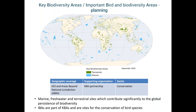Key Biodiversity Areas, KBAs, are nationally identified sites of global significance and are a planning tool. They address biodiversity conservation at the site scale — at the level of individual sites, concessions, or land management units. KBAs are identified using globally standardized criteria and thresholds with clearly defined boundaries. They serve as an umbrella designation including globally important sites for different taxa, such as Important Bird and Biodiversity Areas, IBAs. All high seas KBAs and IBAs have been identified by the BirdLife Secretariat.